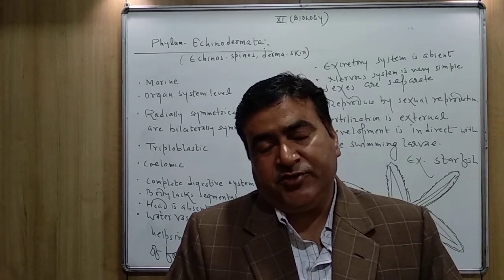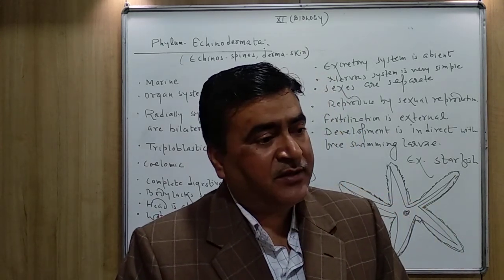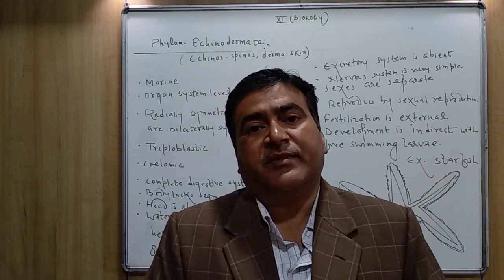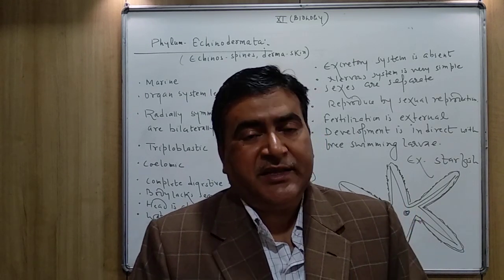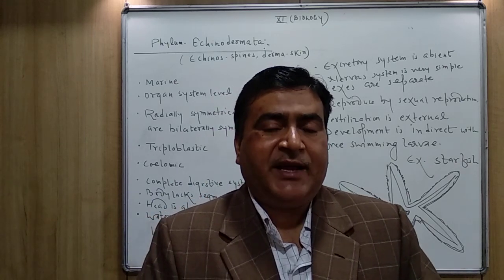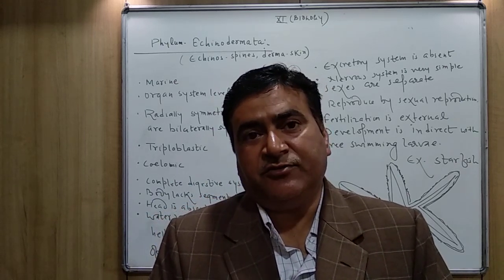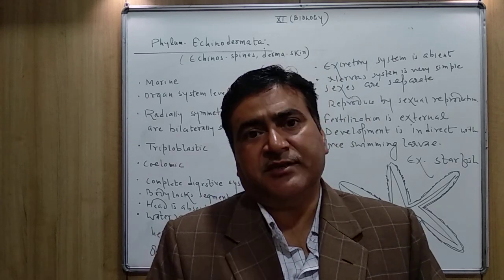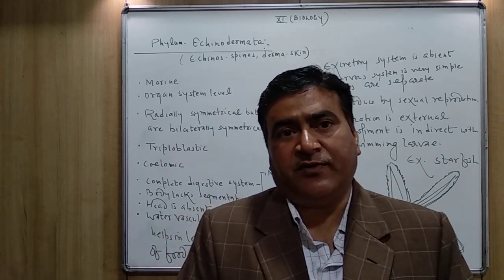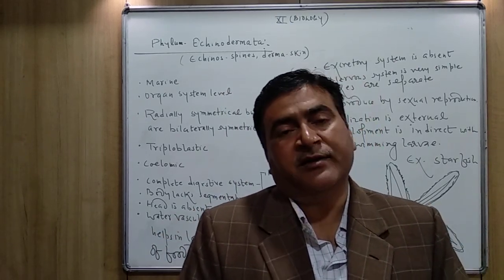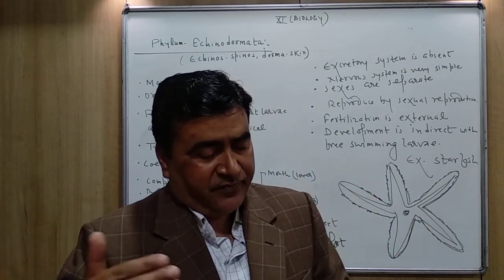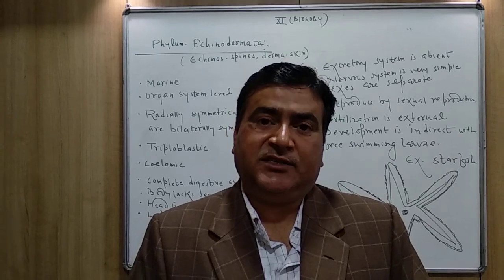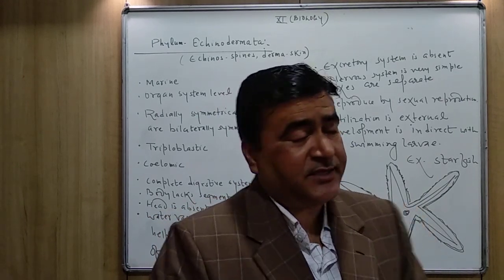There is a digestive system. The excretory system is absent, but excretion still takes place — I will explain through the tube feet. The nervous system is also found but is very simple. So the level of organization is up to the organ system level of body organization.